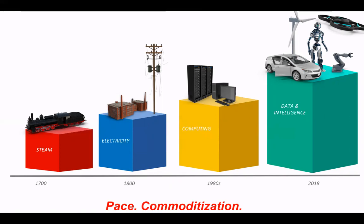The third revolution was the computing revolution, characterized by technologies like the transistor, microelectronics, cheap computing, and Moore's law. Now we're in the middle of the fourth industrial revolution, involving the fusion of the online and physical worlds. This revolution is characterized by data and intelligence, powered by technologies such as the Internet of Things, artificial intelligence, smart manufacturing, and AR/VR.